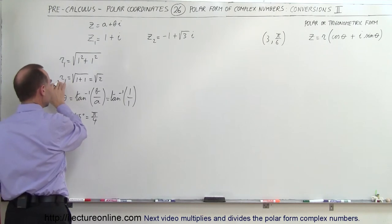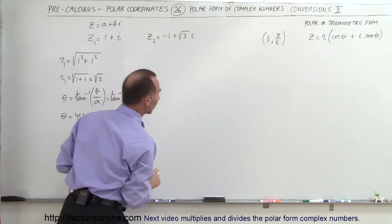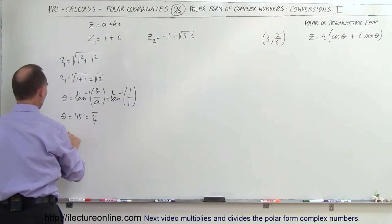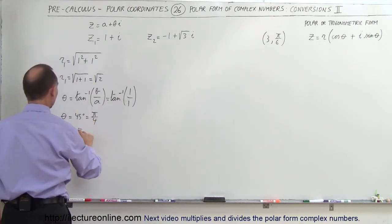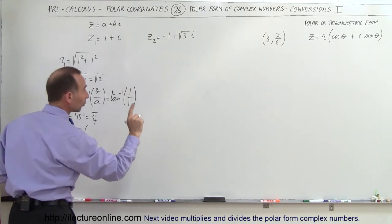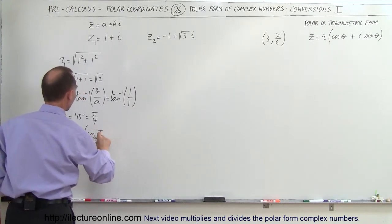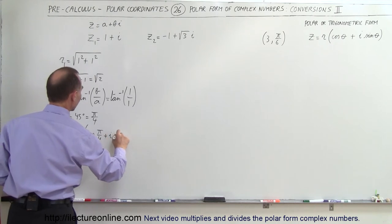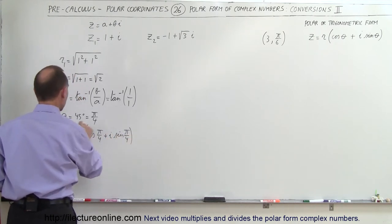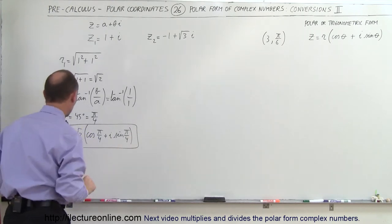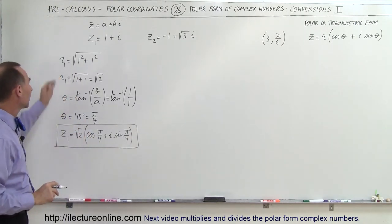Now that we have both r and theta we can plug them into the polar form. So z1 equals r times the quantity cosine of pi over 4 plus i times sine of pi over 4, where r equals the square root of 2. That is the polar, or trigonometric, form of our first complex number.